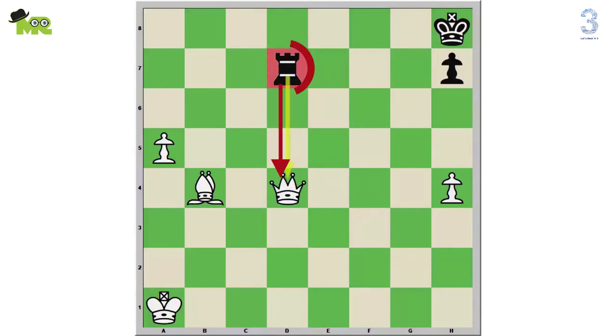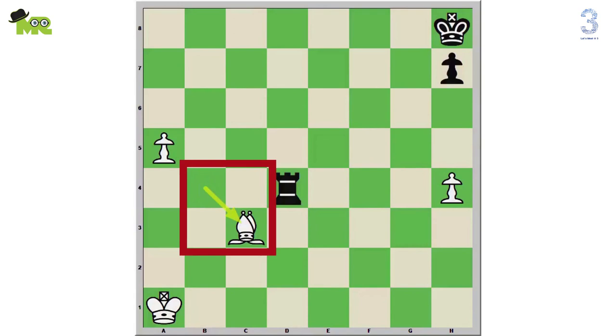If the f2 white queen captures the d4 black queen, then the d7 black rook will capture the d4 white queen. From here, the b4 white bishop can pin the d4 black rook by simply moving to c3 from b4.